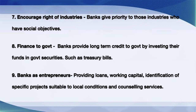Point seven: encourage the right industries. Banks give priority to industries that have social objectives. Entrepreneurs must focus on the present and the upcoming future in terms of innovation, technology, industrialization, and manufacture of goods and services. Industries and entrepreneurs should be focusing on what's best for the people and what's best for the future.